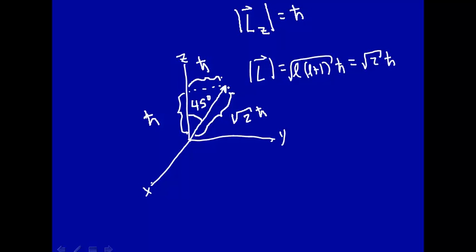And again, it could be 45 degrees anywhere around here. So this can point anywhere as long as it makes a cone around the z-axis, as long as the projection of the vector along the z-axis is h-bar. So that's something that you wouldn't expect if you think about this thing classically.